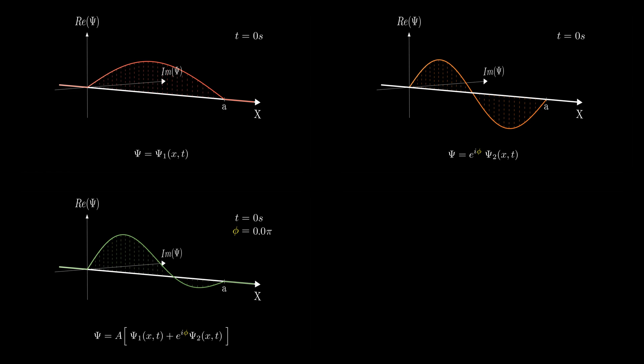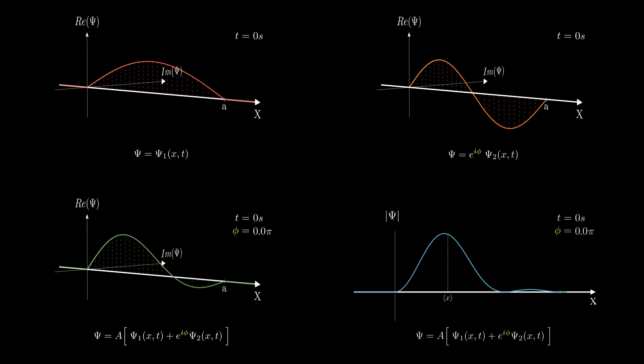Changing phi affects the relative phase, which shifts the interference pattern. On the bottom right we have the square modulus of psi, representing the probability density, a quantity directly measurable in quantum mechanics.